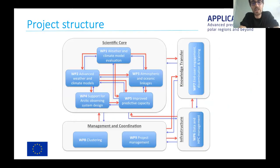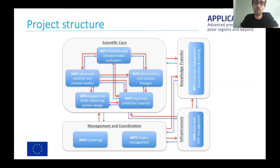As for the project structure, the scientific core has five main work packages. The first is about evaluating the weather and climate models — defining metrics that cover, for example, the linkages with the mid-latitudes, which were not well established at the beginning of the project, as well as skill performance and many different aspects.